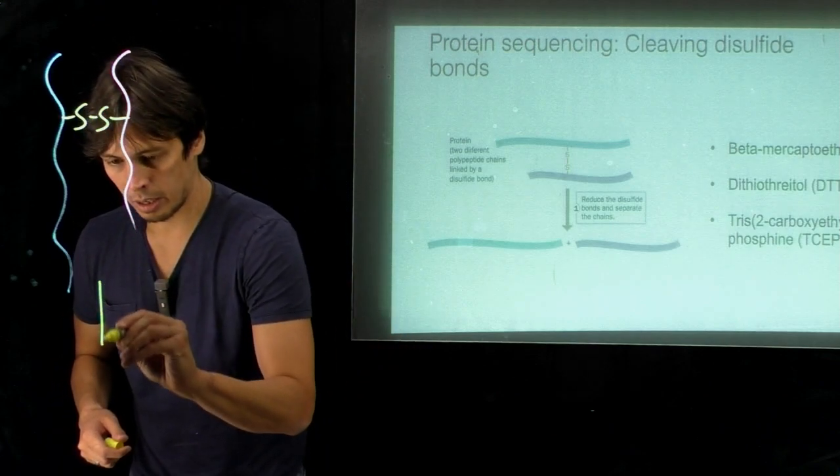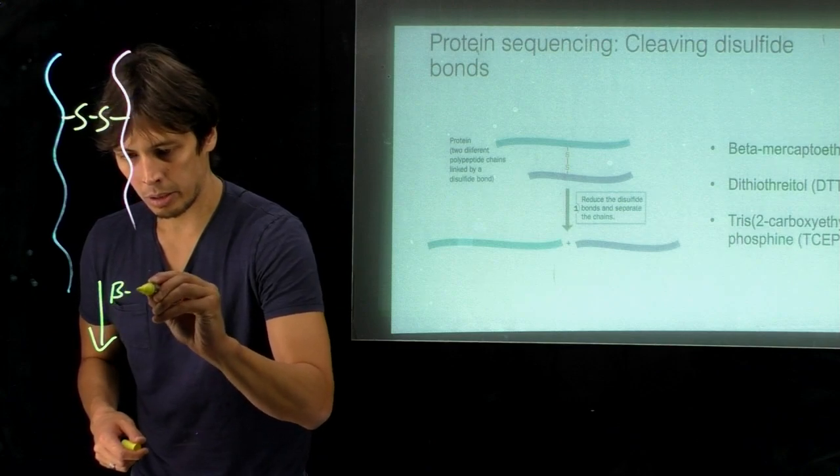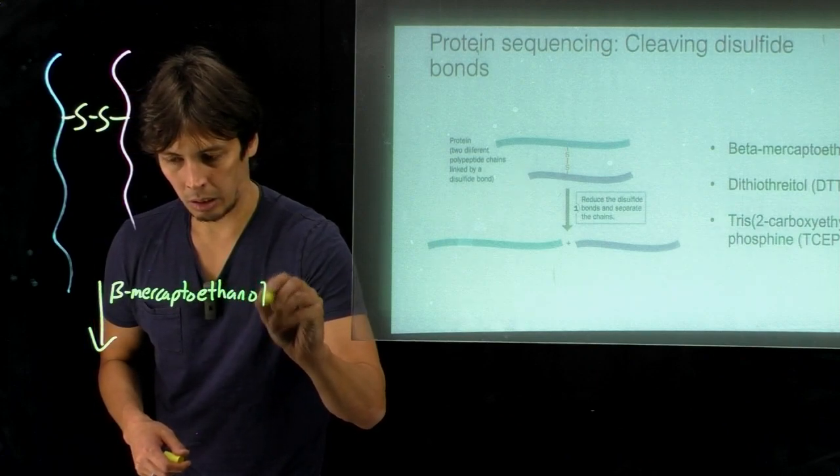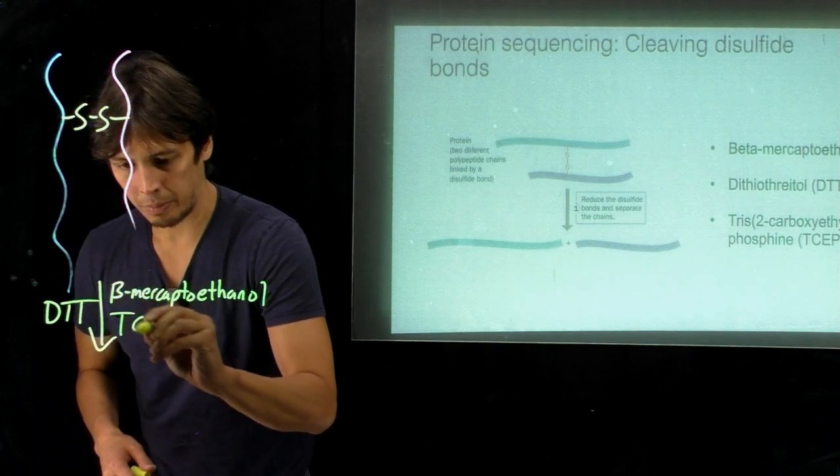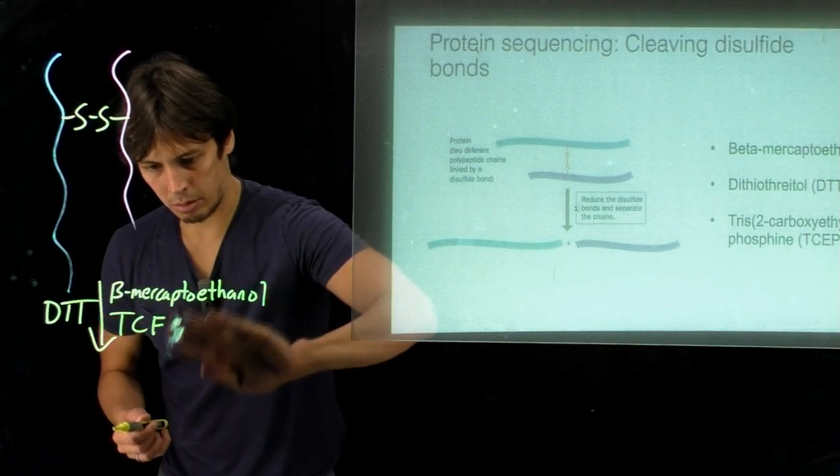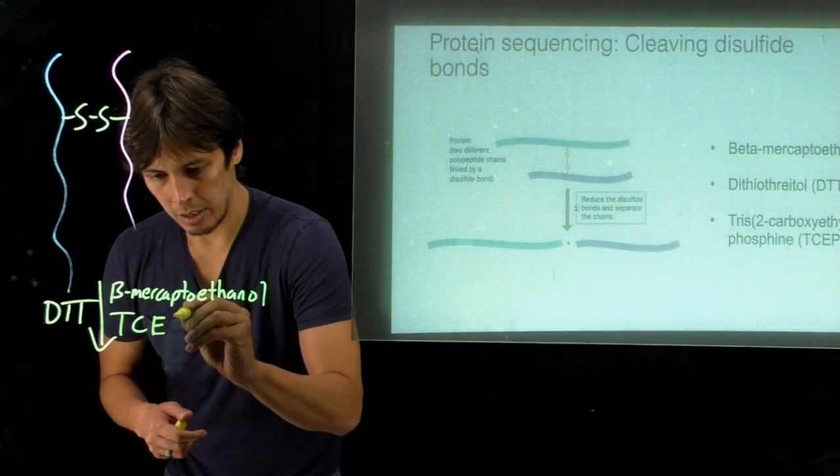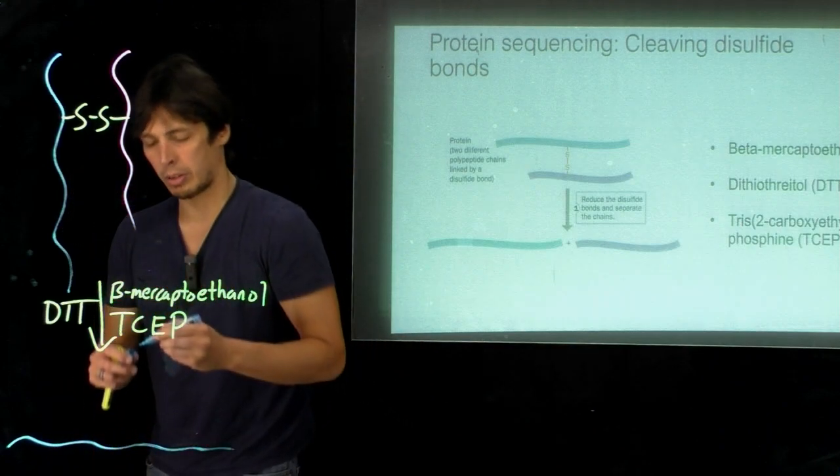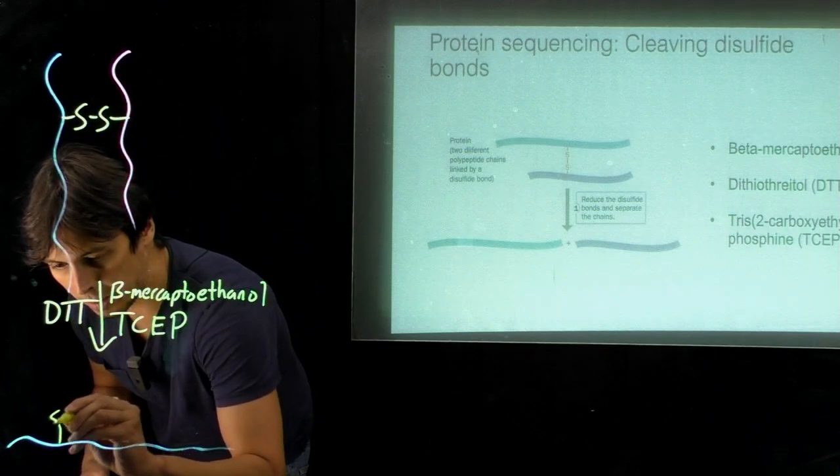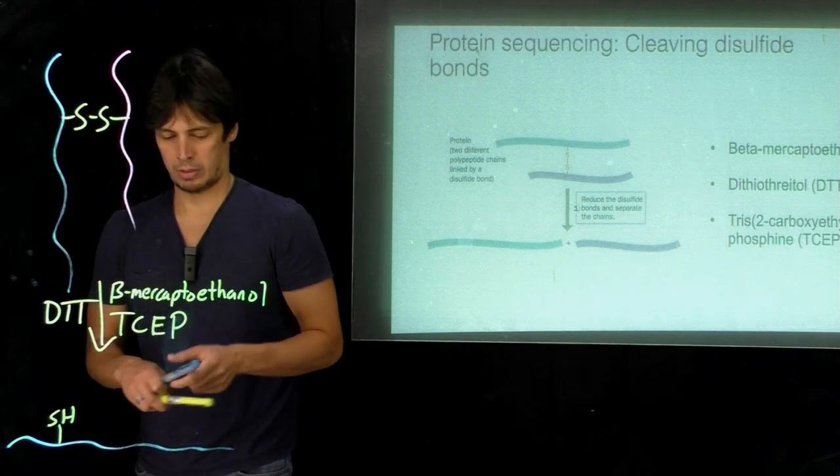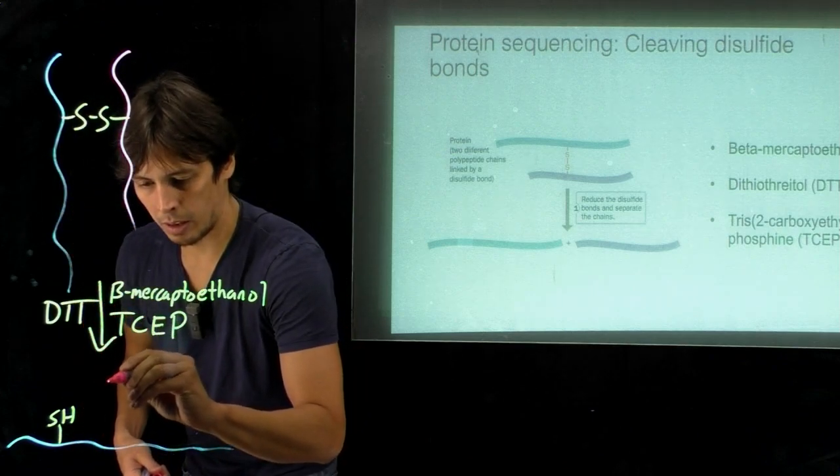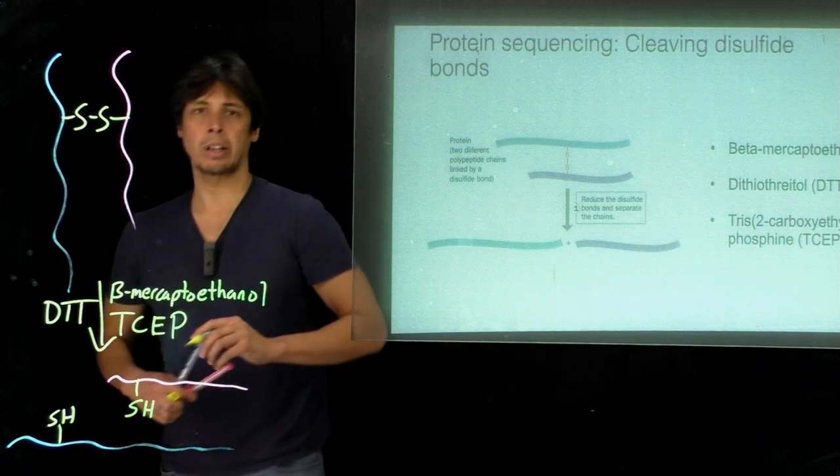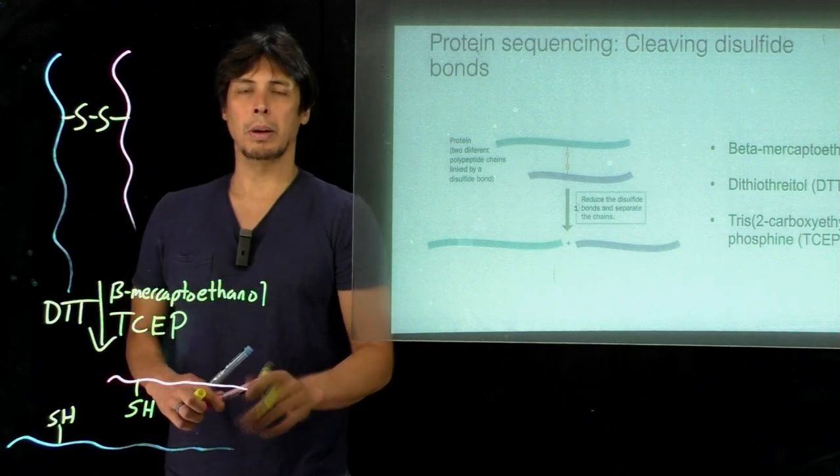By adding one of these three reagents to your protein, such as DTT or TCEP, we can separate out these amino acids by reducing the disulfide bond to thiols. Now we can analyze these two peptides individually.